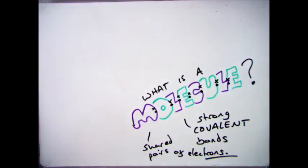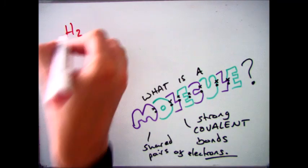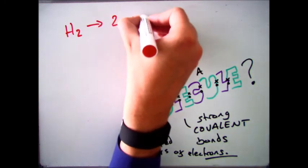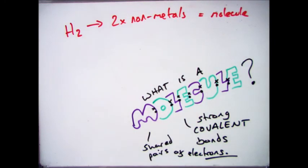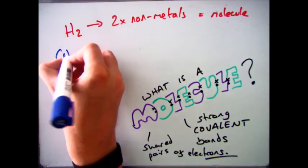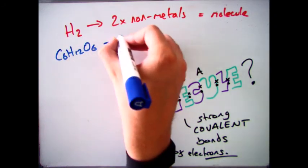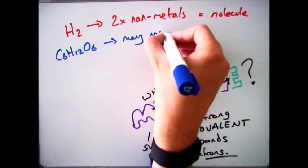So what is a molecule? What you need to be able to do is look at the structure and the elements contained within a compound or a substance and tell me whether it's a molecule or a lattice. For example, hydrogen which is made up of two non-metals only, that is a molecule.